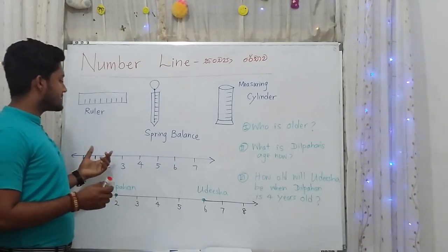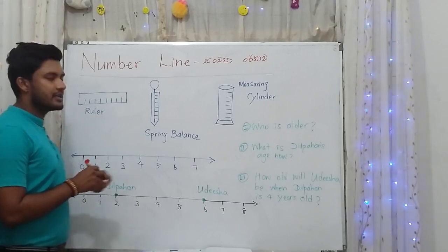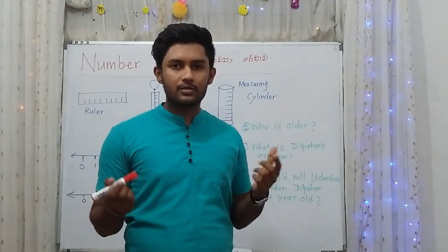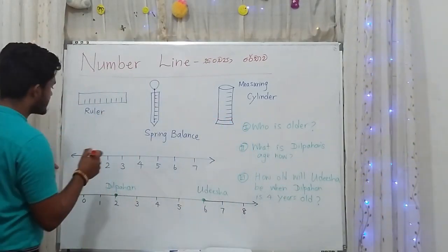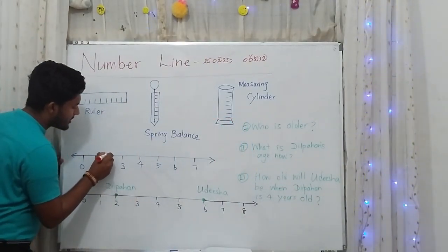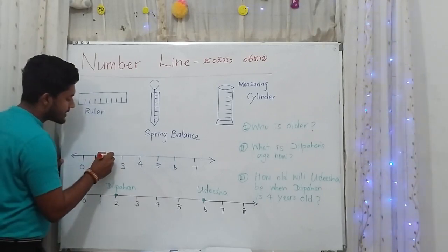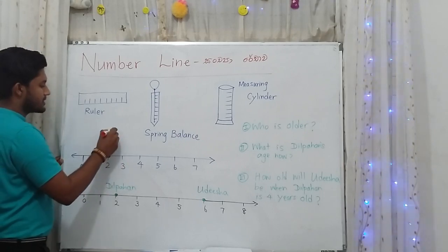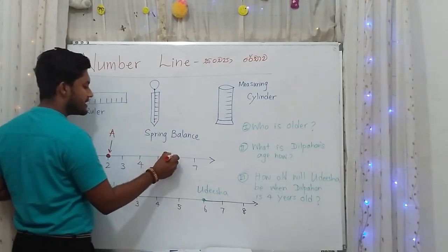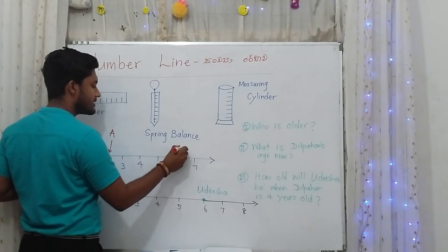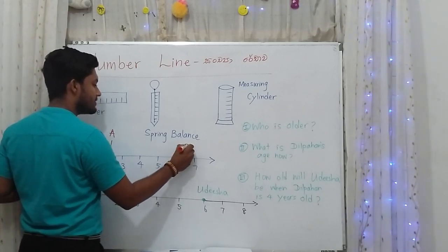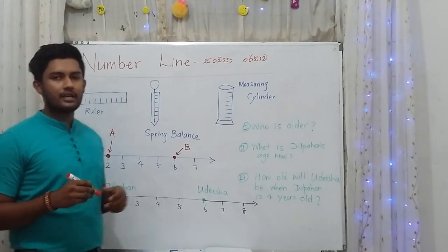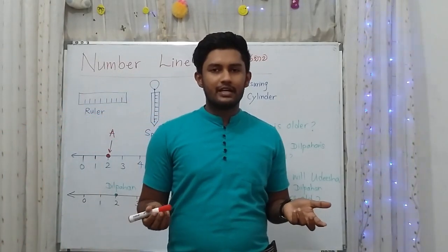On the number line, if we want to mark point A as two, we keep a dot and color that dot because it is equal to two. If B equals six, we can mark it similarly on the number line.